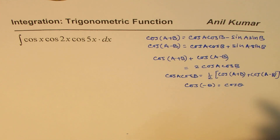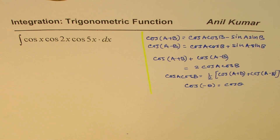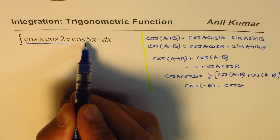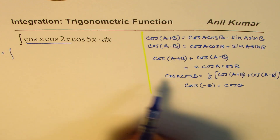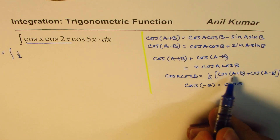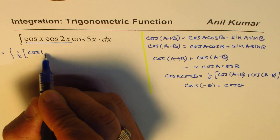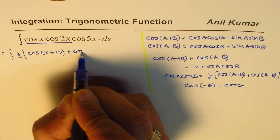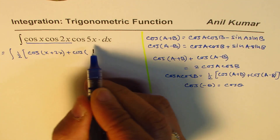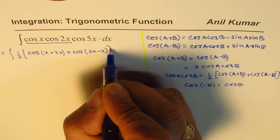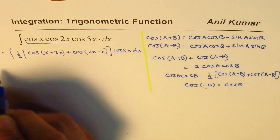We can write this product into sum form. In integration we don't have any way to find integrals of products directly, so we want to write them as sums and differences. Let me combine the first two cosines first, then combine the third one. We apply this formula: half of cos(x+2x) plus cos(2x-x), times cos·5x dx.